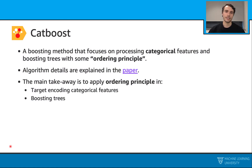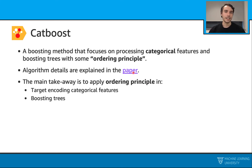Let's talk about CatBoost. This is our last gradient boosting method for today. This technique specifically focuses on some ordering principles, and it applies this to processing categorical features and also boosting the trees. Here is the paper link — you can go back to that for further reading. The main takeaway from this paper is this ordering principle, and we will apply this when we are target encoding our categorical features and also boosting our trees. In the next couple of slides, I will explain what target encoding is and show you how to do ordered target encoding and ordered boosting.